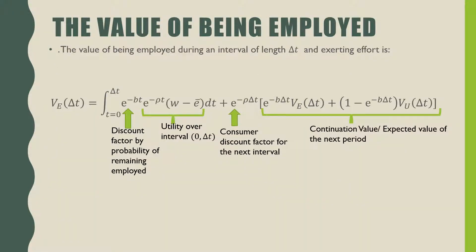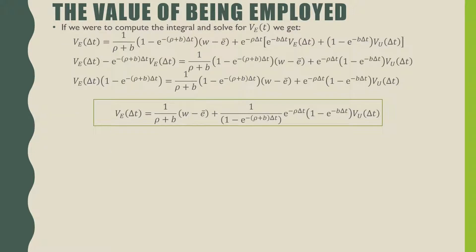The value of being employed during the interval of length delta T and exerting effort is given by the following equation, where VE at delta T is equal to the integral of the discount factor times the probability of remaining employed times the utility over the interval zero to delta T, plus the consumer discount factor of the next interval times the continuation value, which is the expected value of the next period. If we compute the integral and solve for VE at delta T, we get the following.